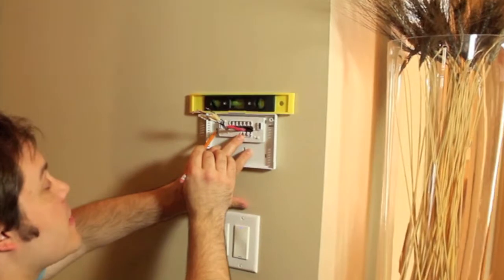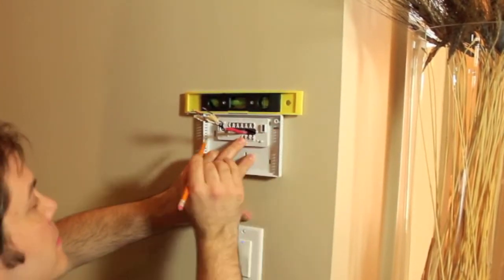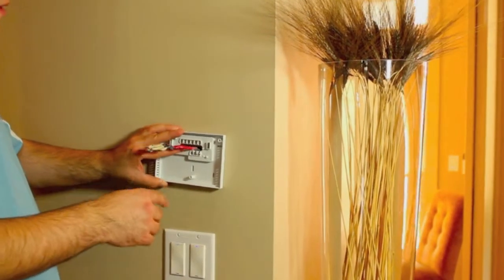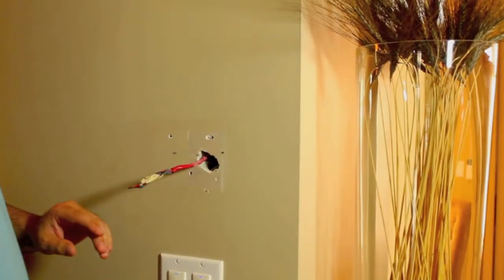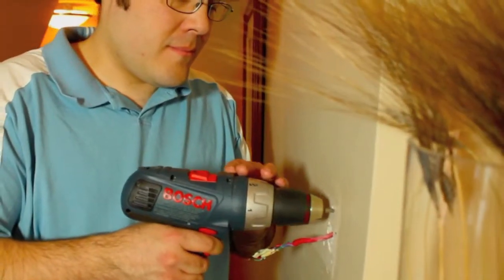Select two of the holes you feel are best to keep the thermostat in place and mark them with a pencil. Once the holes are marked you can remove the back plate. Then you can use the drill and the 3/16th bit to make guiding holes for the screws.